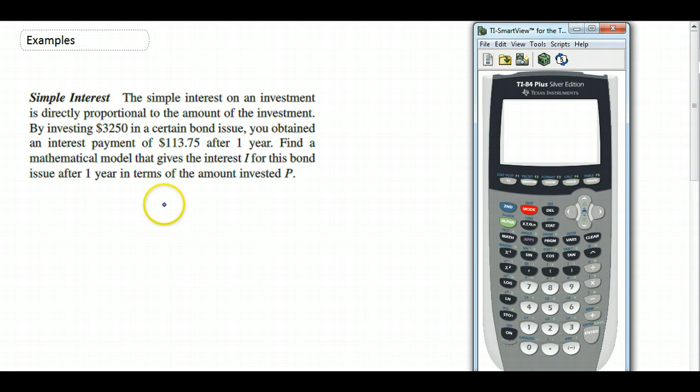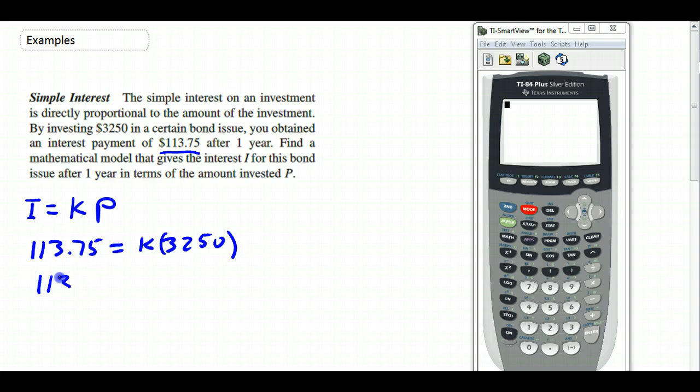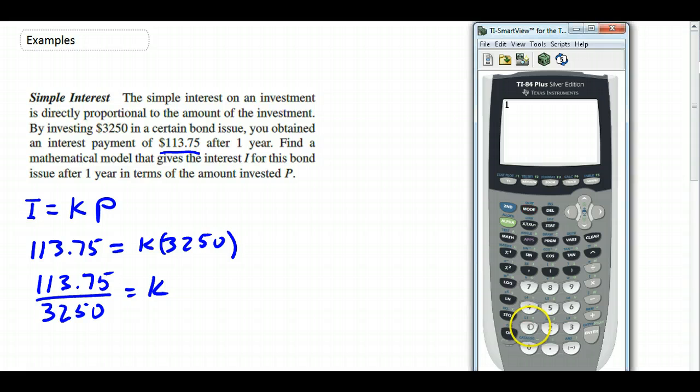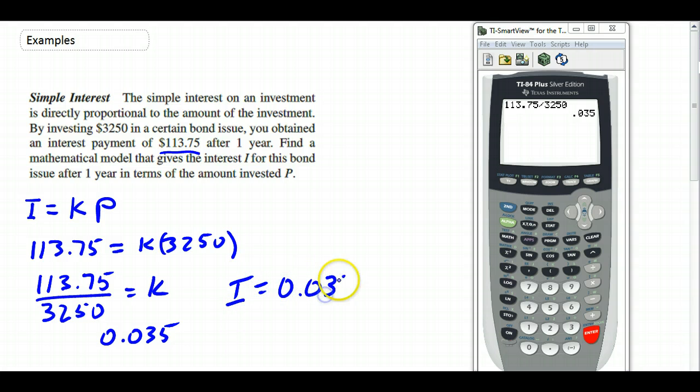So let's do some examples. The simple interest on an investment is directly proportional to the amount of the investment. So we'll say that the interest I is directly proportional to the amount, which we'll call P. And we know that we got an interest of $113.75 after one year of investing $3,250. So that means solving for K, I'm going to divide that 113.75 by 3250. Let's go over to our calculator and do that. 113.75 divided by 3250. And we get K is 0.035. So our model will be I equals 0.035P.